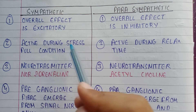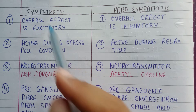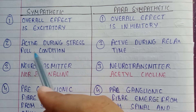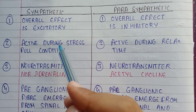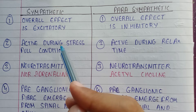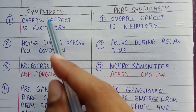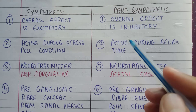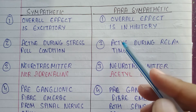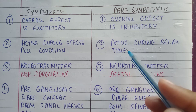The second point of difference is that the sympathetic nervous system is active during stressful conditions. For example, if you are standing and a dog right behind you is coming to bite you, then the sympathetic nervous system is what will work. Whereas the parasympathetic nervous system is active during relaxed times.